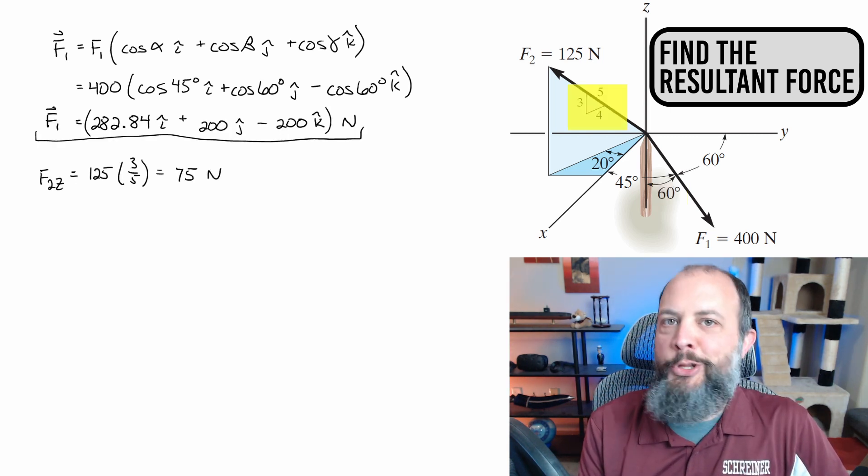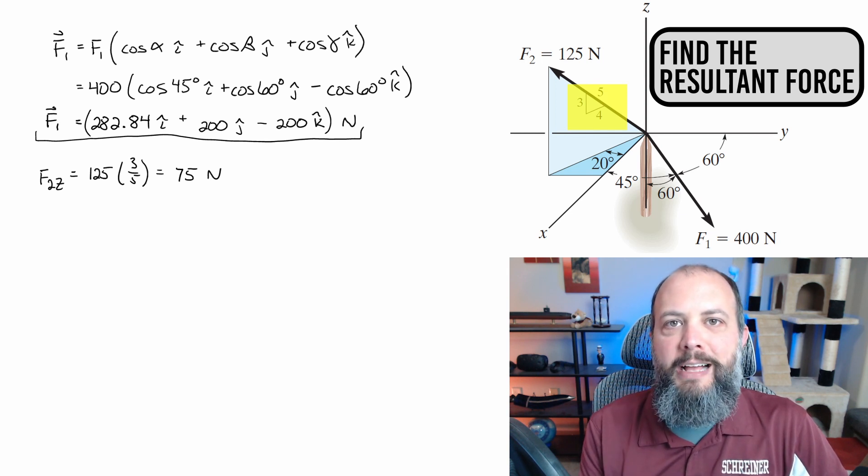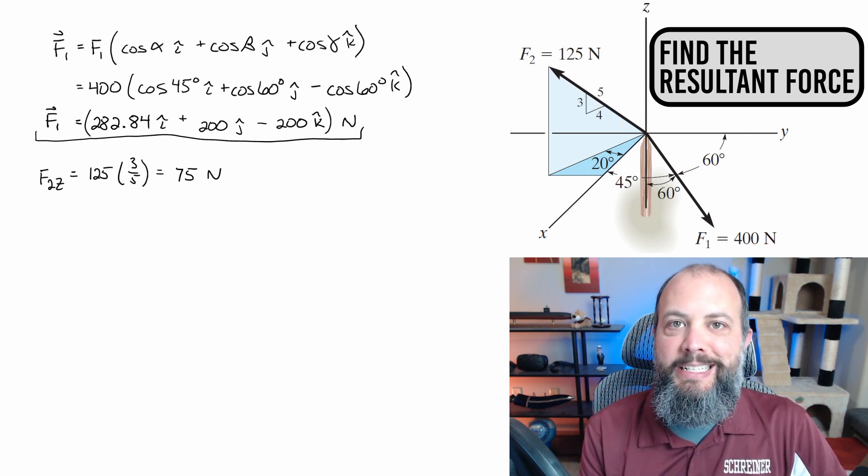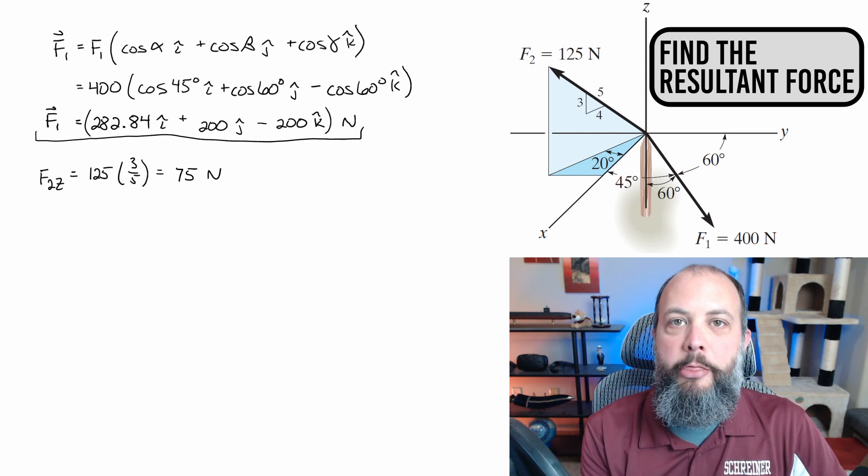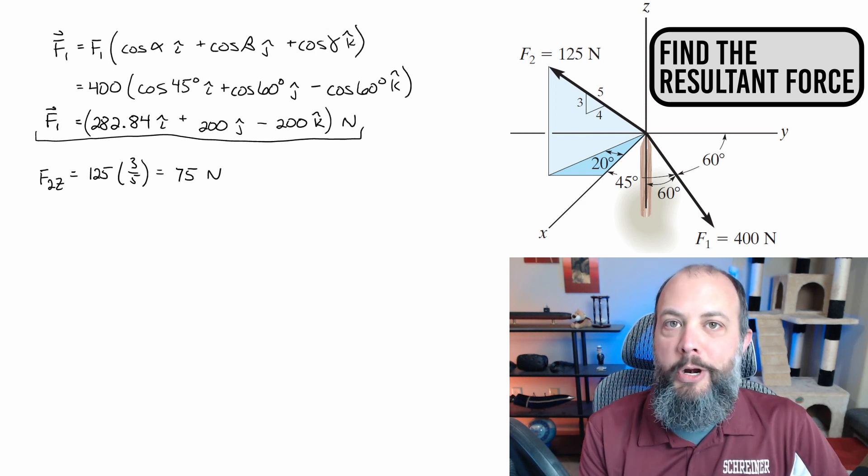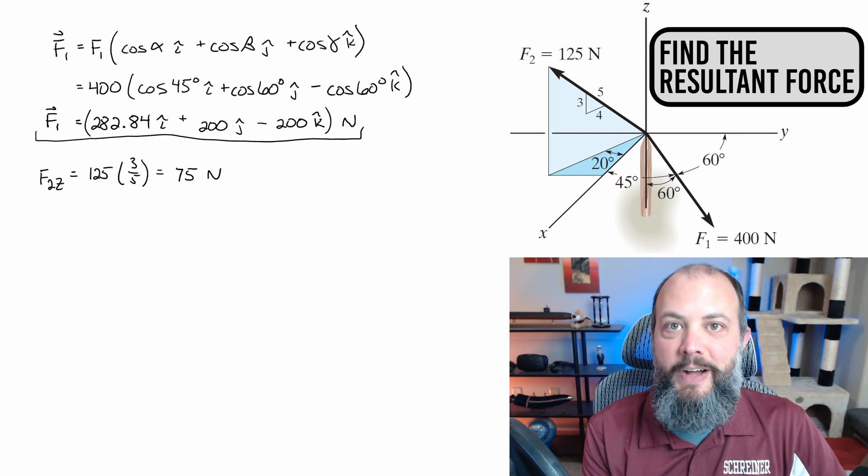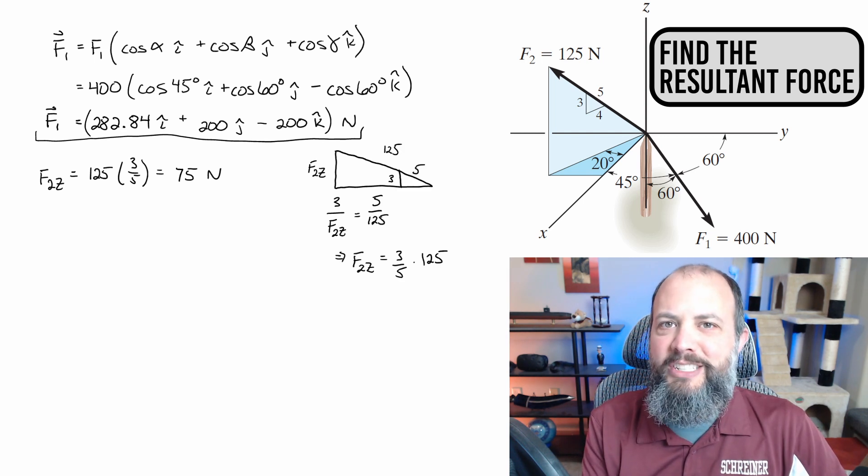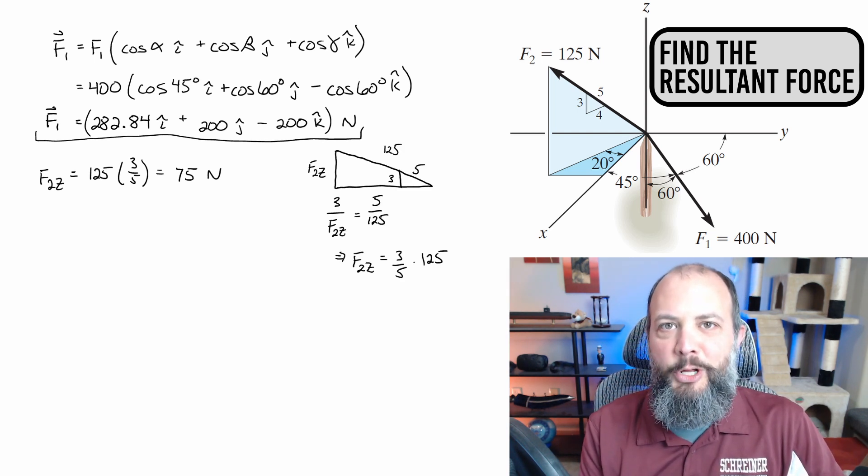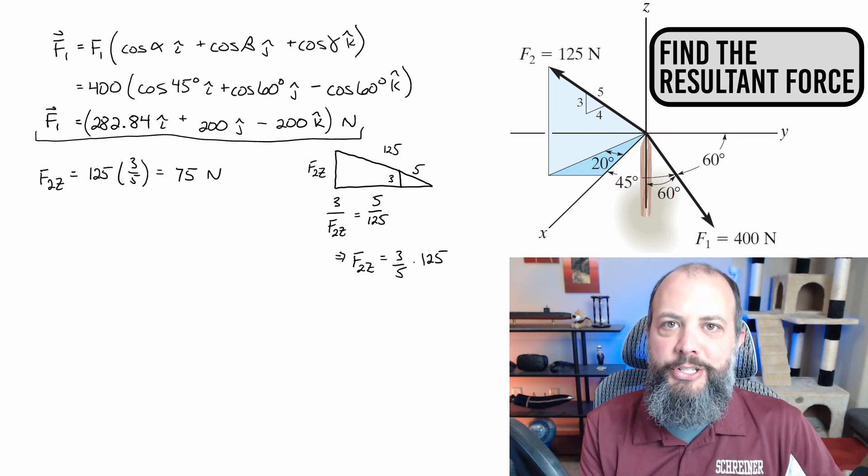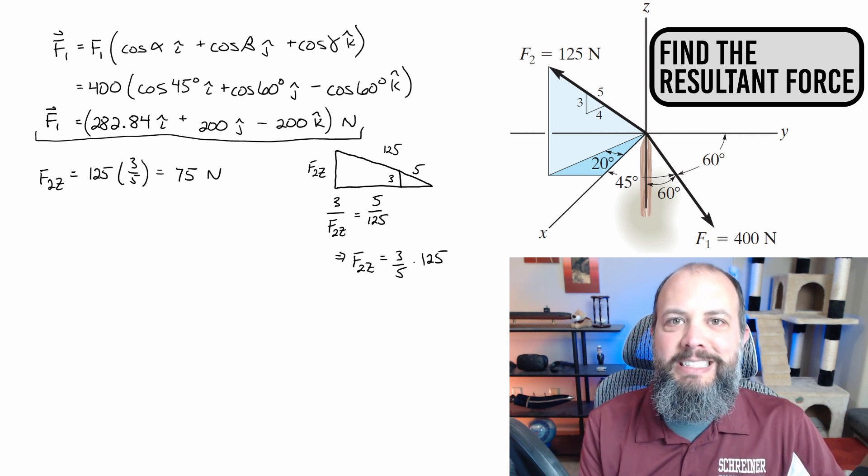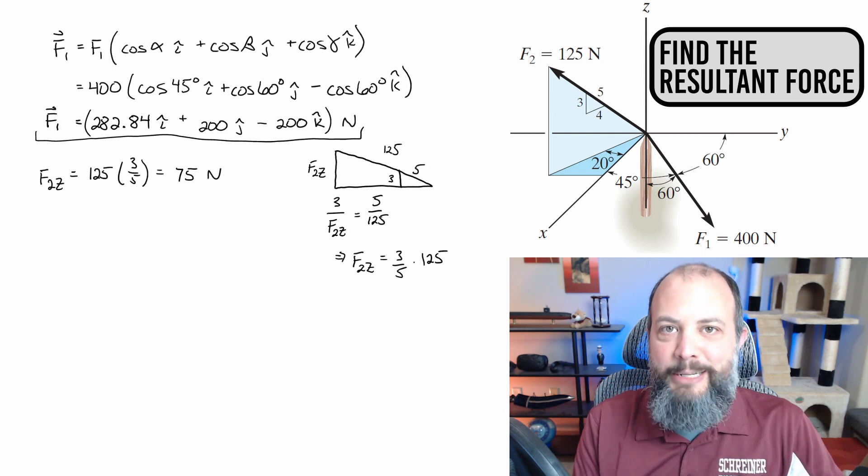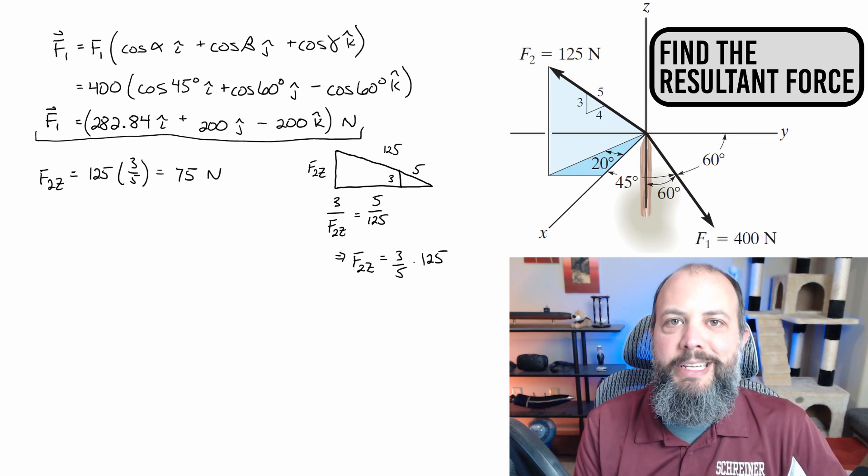One down, one to go. So I'm going to save a little bit of calculator work on this one by using the 3, 4, 5 triangle. The Z component is the vertical direction. That is the three side of the triangle. And the 125 newtons is the diagonal direction. That's the five. So the vertical component is three fifths of 125. And if you still have trouble with these triangles, it may help to actually draw out the similar triangle. So you can set up a ratio three to F1Z is going to be equal to five over 125. That's similar triangles. And when you rearrange this, that lets you solve for the Z component.